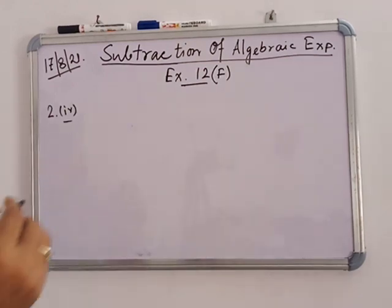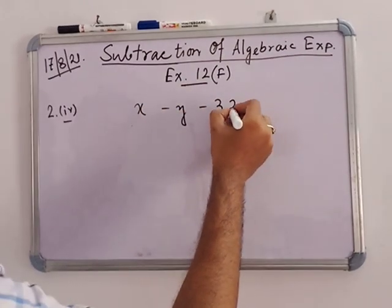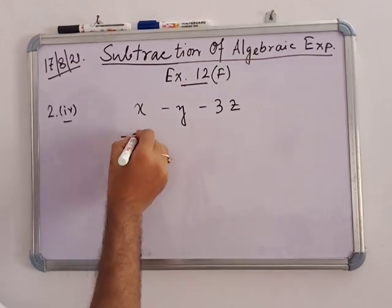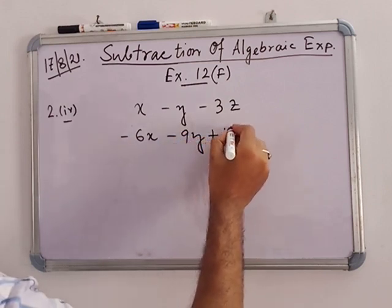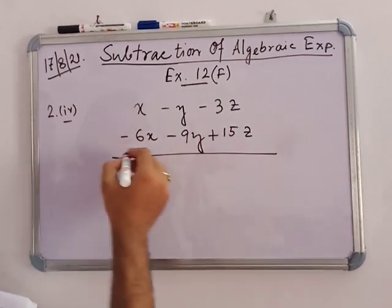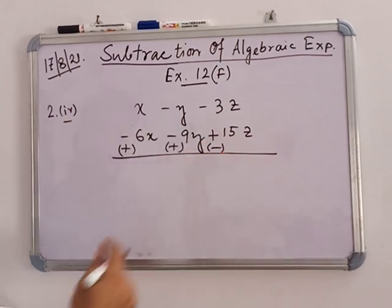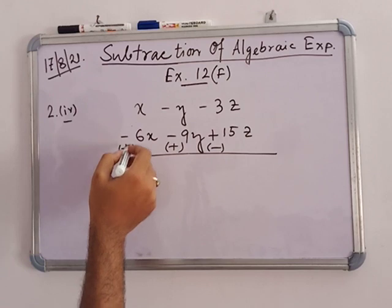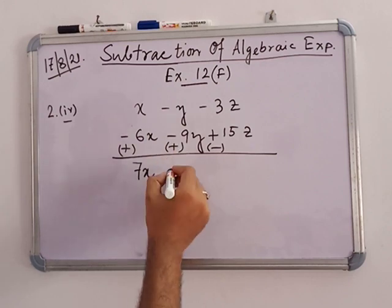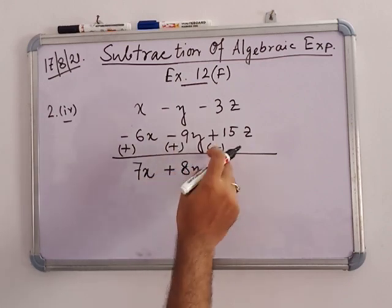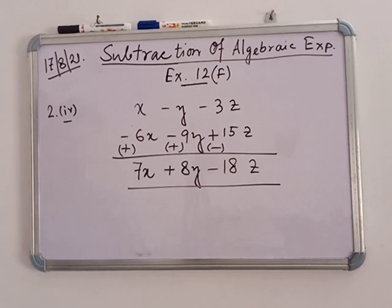Next, number 24: subtract minus 6x minus 9y plus 15z from x minus y minus 3z. Change the signs: minus 6x becomes plus 6x, minus 9y becomes plus 9y, and plus 15z becomes minus 15z. Then: x plus 6x equals 7x; minus y plus 9y equals plus 8y; minus 3z minus 15z equals minus 18z. This is the answer.